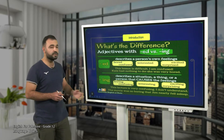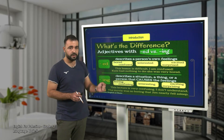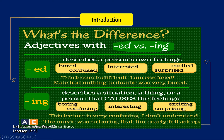The second group of adjectives — the -ing form — describes a situation, a thing, or a person that causes the feeling. For example: boring, confusing, interesting, exciting, surprising. This lecture is very confusing — I don't understand, so the lecture causes this feeling. The movie was so boring that Jim nearly fell asleep — the movie causes this feeling.